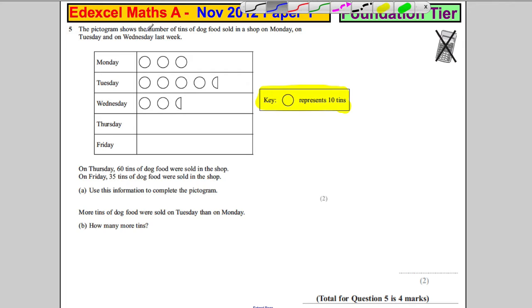So let's just fill this in to make our life easier. On Monday, that's 10, 10 and 10. Clearly 30.